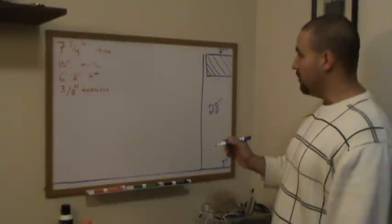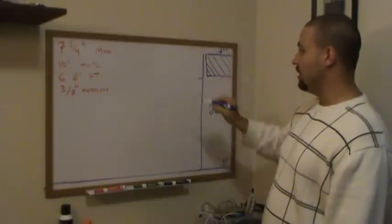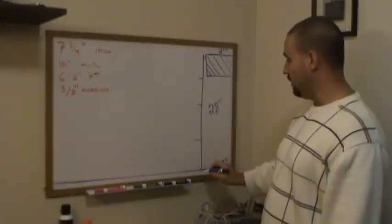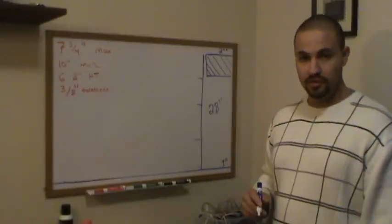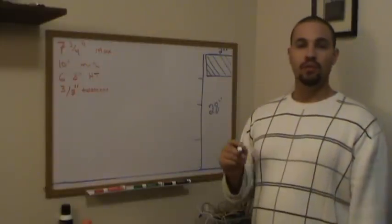7 can go into 28 four times, so we will measure from the top of our second floor, down 7 inches, and make a mark. Down 7 inches again, down again, and one last time, which will be the top of our first floor. Now we know what our rise is, we need to figure out what our run is.